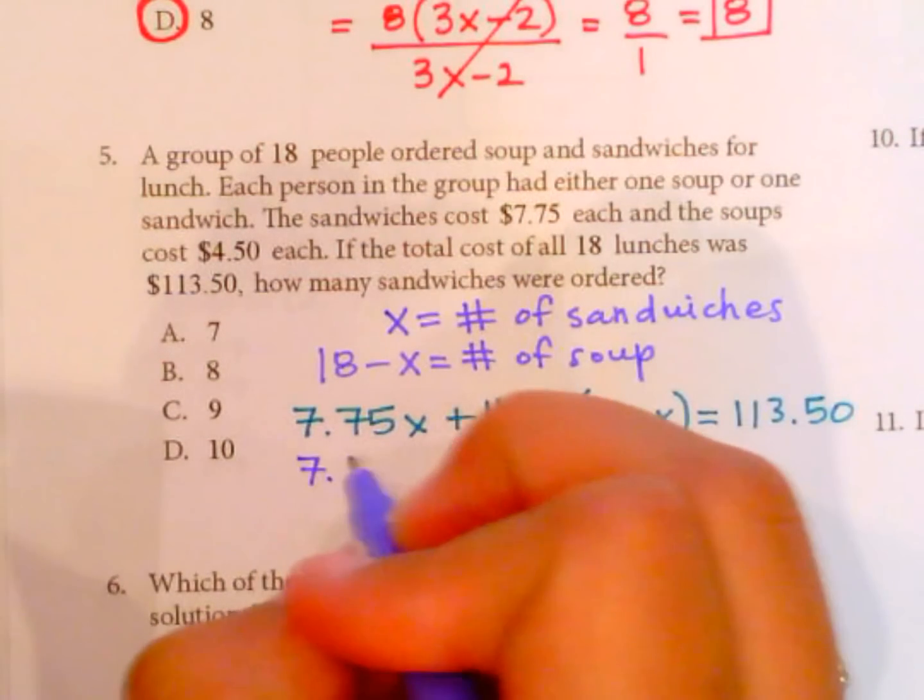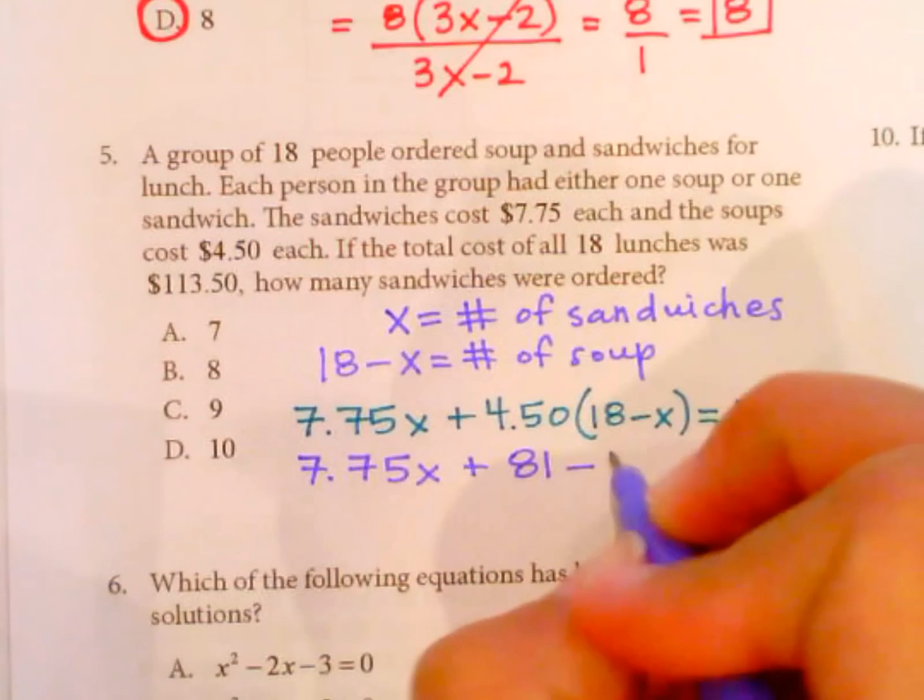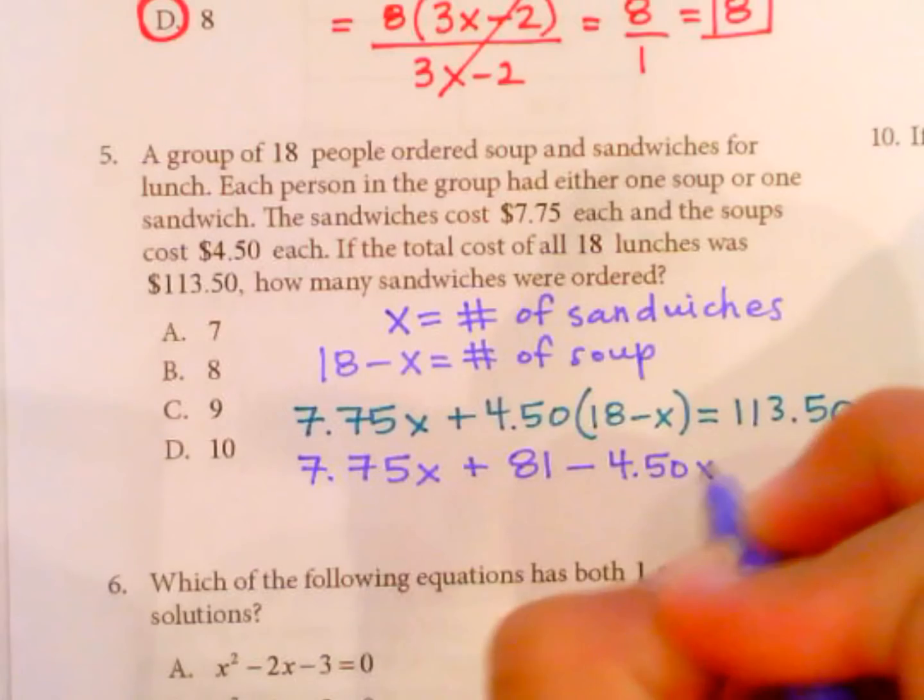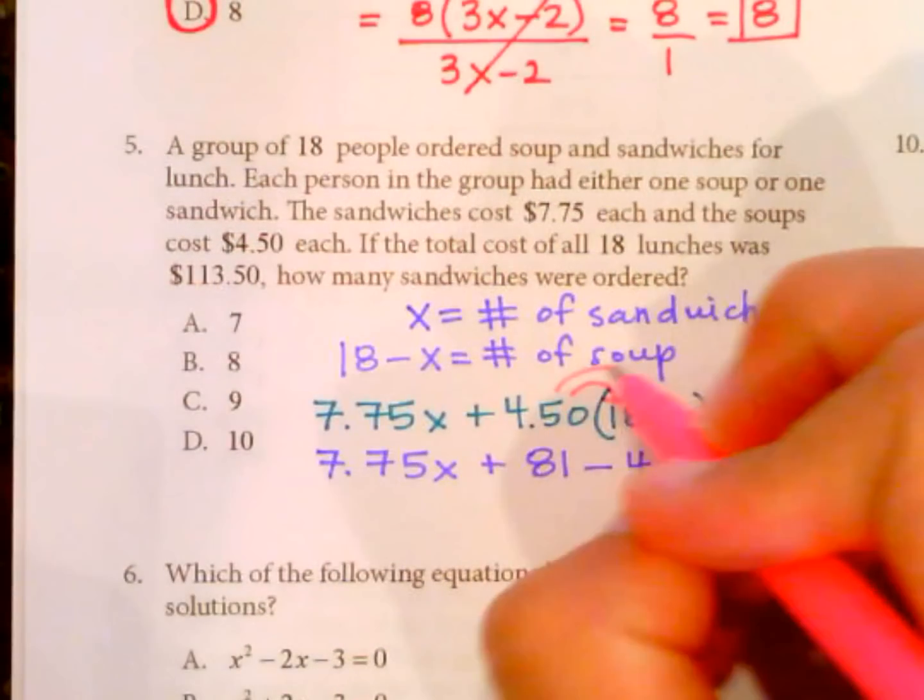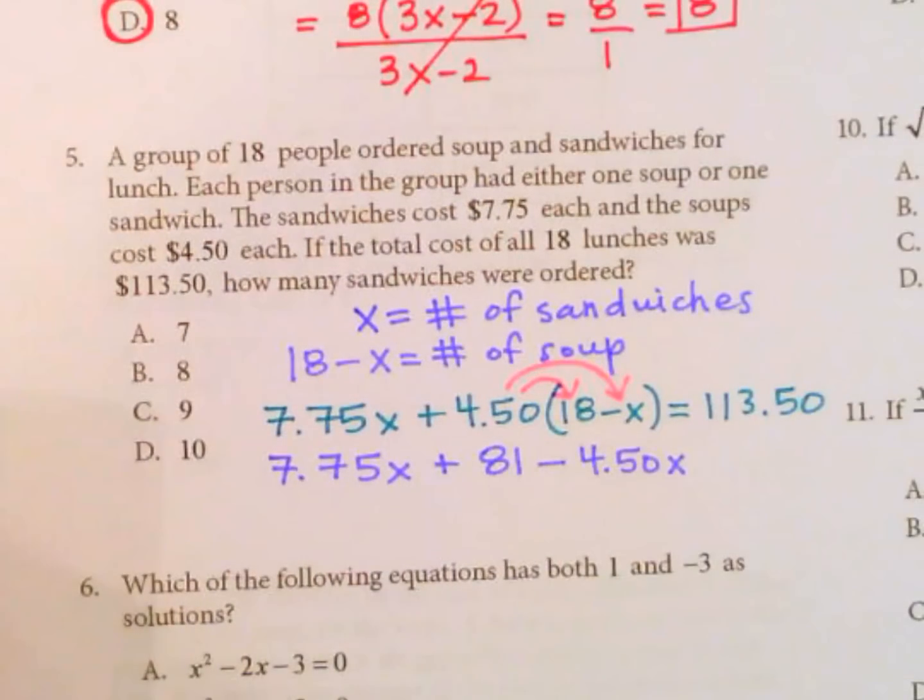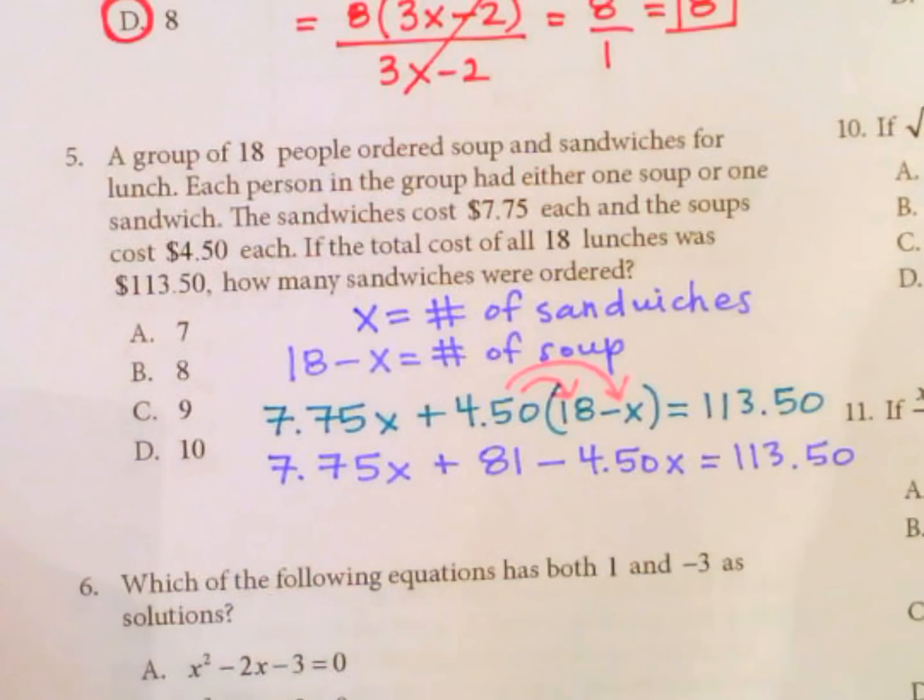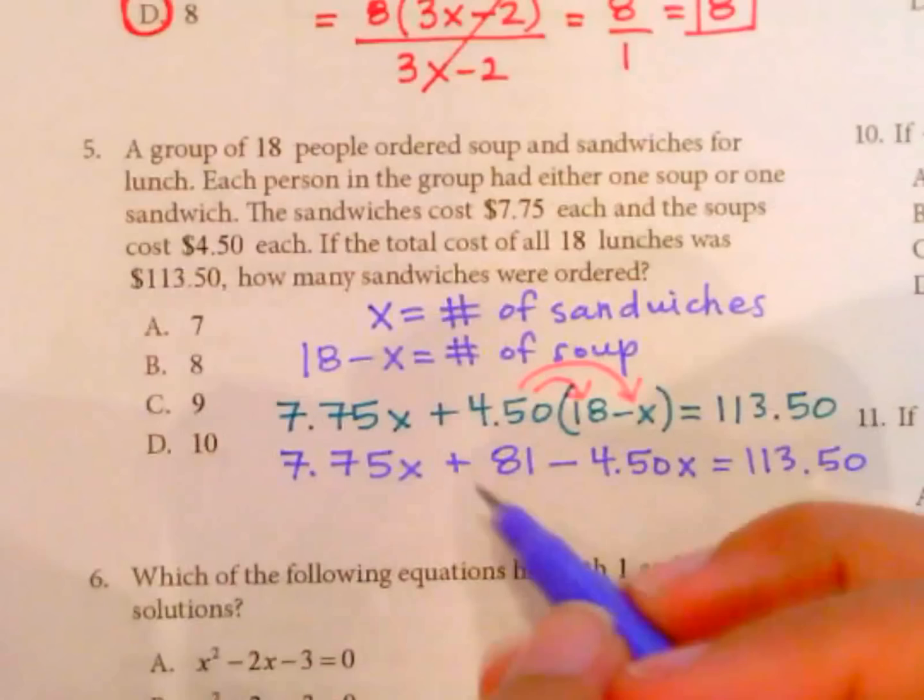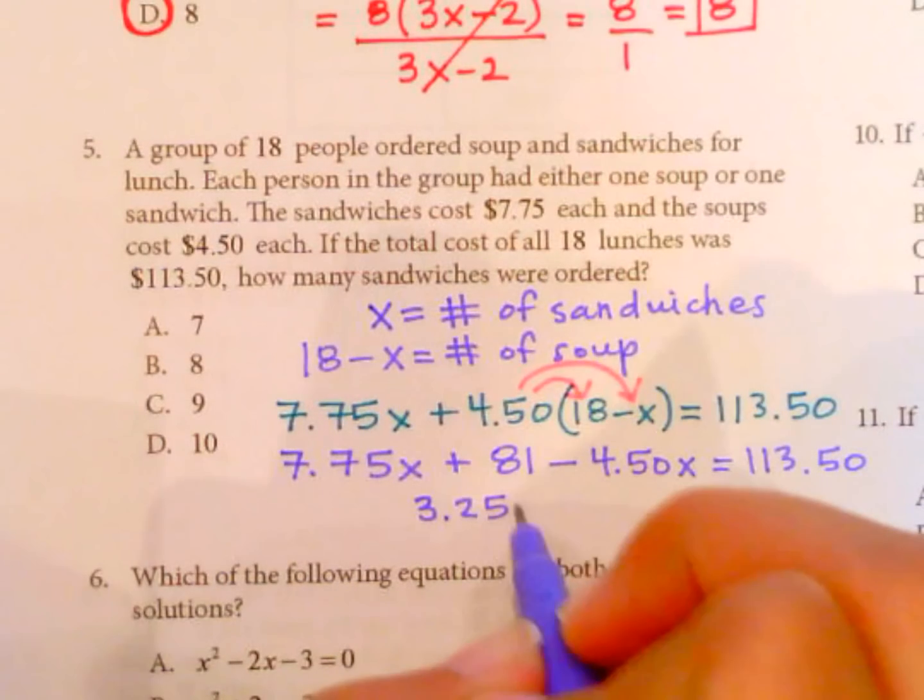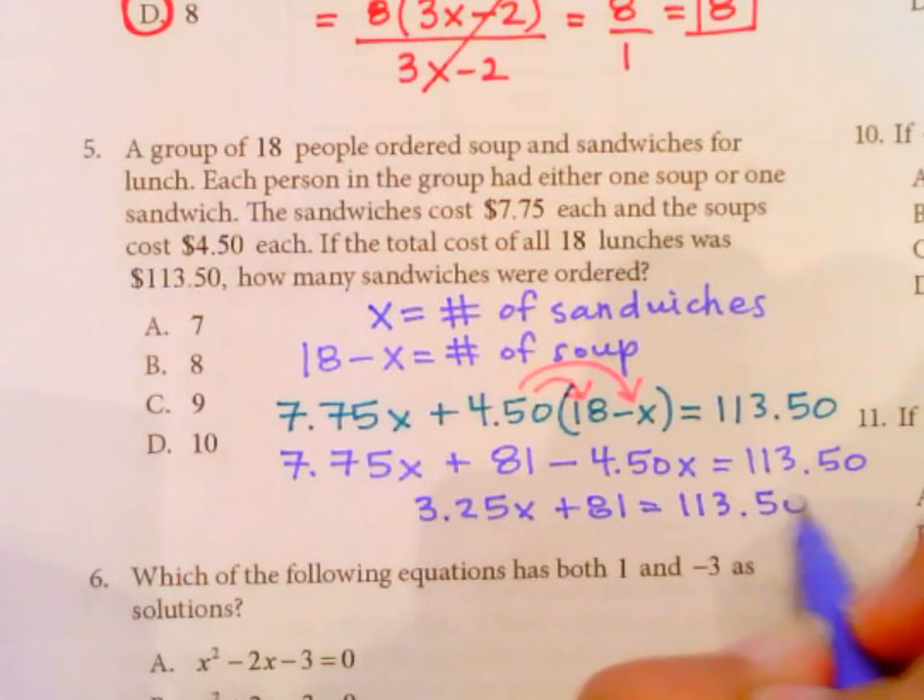So, $7.75x plus $4.50 times 18 is 81 minus $4.50x. And just as a reminder, if you're wondering where I'm getting this, we have to distribute the $4.50 to both terms inside the parentheses. And then this equals $113.50. So now I'm going to combine my x's. $7.75 minus $4.50 equals $3.25x plus $81 equals $113.50.